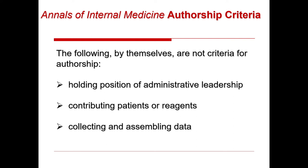I want to share the Annals of Internal Medicine authorship criteria, which are widely used by other journals too. They state that the following are not criteria for authorship by themselves: holding a position of administrative leadership does not qualify — so a branch chief or laboratory chief in the intramural program doesn't necessarily need to be on a paper. Contributing patients or reagents to a study does not by itself constitute criteria for authorship, and collecting or assembling data does not constitute authorship criteria.